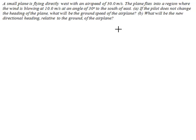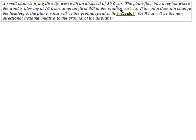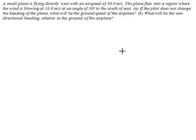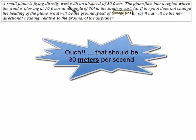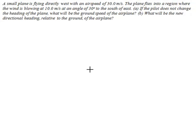This problem essentially is not any different from the one involving the person at the airport walking onto the moving walkway. The small plane is traveling directly west with an airspeed of 30 meters per second — this is like the walker walking at 3 miles per hour before getting on the moving walkway. The wind blowing at 10 meters per second is like the walker getting onto the moving walkway. The plane goes from moving 30 meters per second directly west relative to the ground, to moving 30 meters per second to the west relative to the air. The air moves just like a moving walkway.